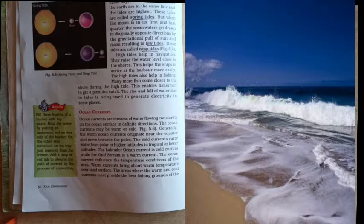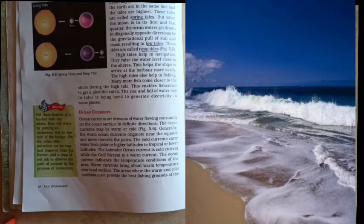Tides help in navigation. They raise the water level close to the shore. This helps the ships to arrive at a harbor more easily. The high tides also help in fishing. Many more fish come closer to the shore during the high tide, and this enables the fishermen to get a plentiful catch. So children, this is about the tides. Why do we see different types of tides, when does this occur, and what are the reasons?